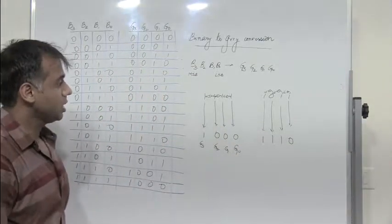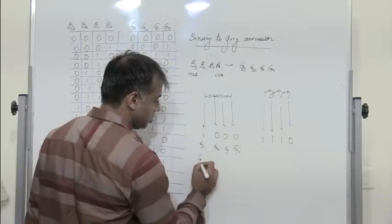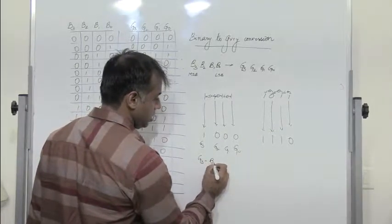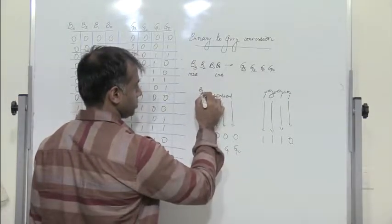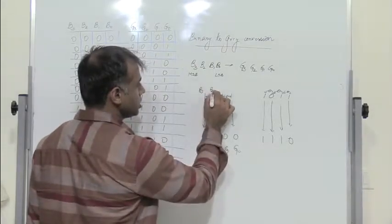So what is the expression? G3 is nothing but B3. What is G2?